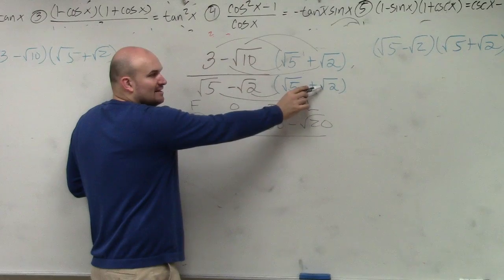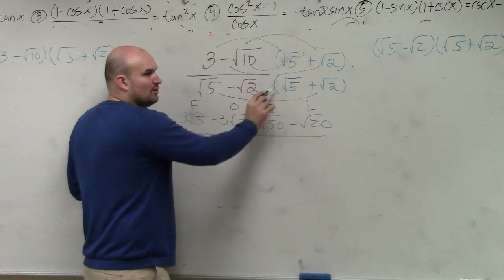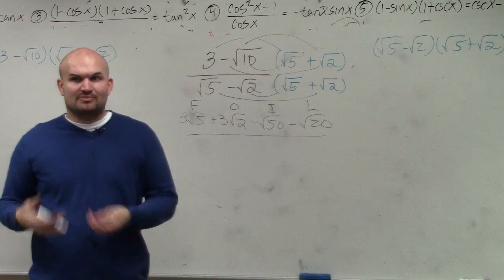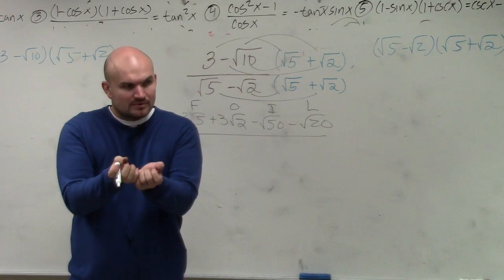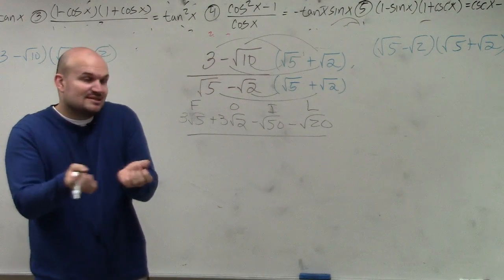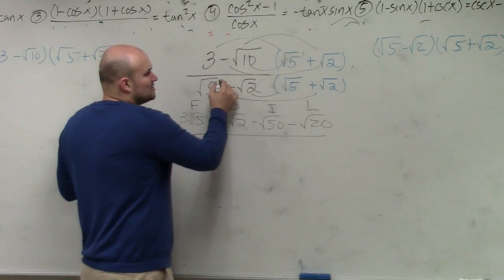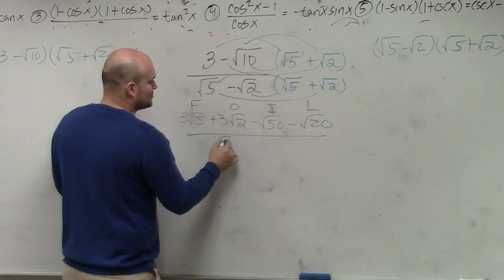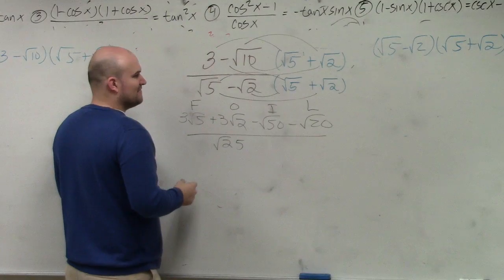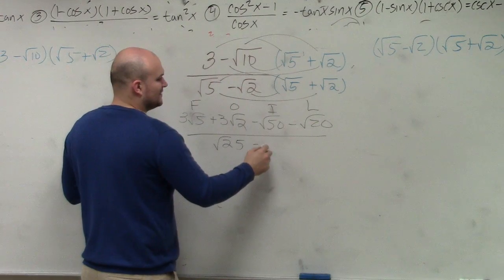this is going to give me square root of 10, and this will give me negative square root of 10. What's the square root of 10 plus negative square root of 10? It's just going to be 0, correct? So my middle terms add to 0. So all I simply do is multiply to give me the square root of 25. So multiply my first and multiply my last, which is negative square root of 4.